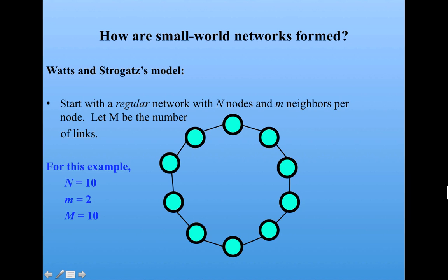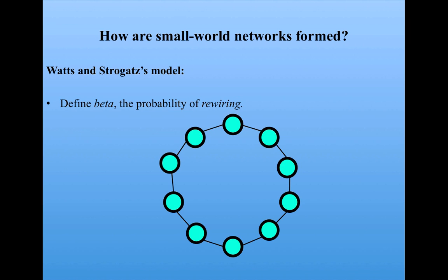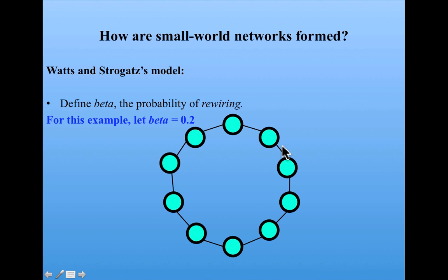What's going to happen in this model is that some of these links, which are right now between nearest neighbors, are going to be rewired. That is, they're going to be ripped apart and then reattached to some distant neighbor to model the making of a distant connection. In this model, there's a parameter called beta, which is the probability of rewiring each link. For this example, let's let beta equal 0.2.